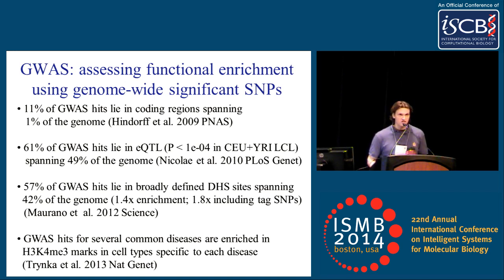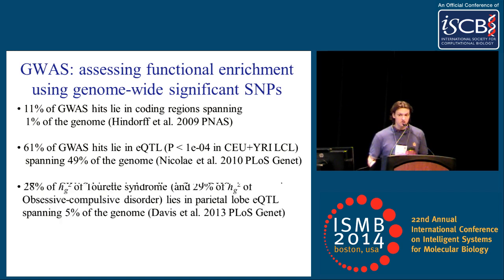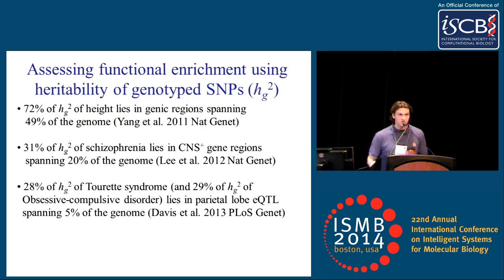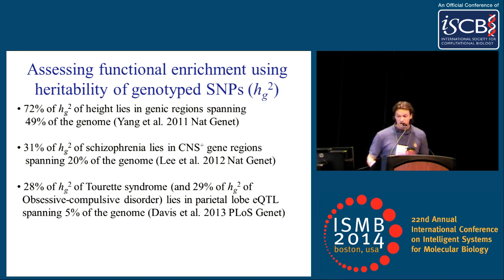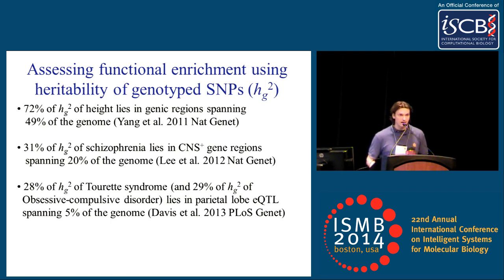A lot of this initial work focused on genome-wide significant SNPs from GWAS. More recently, people have started to be interested in the heritability approach. Initially, Yang et al. 2011 looked at genic versus non-genic regions in height. Then Lee et al. 2012 looked at CNS-plus gene regions for schizophrenia. And more recently, some interesting work with quite large enrichment for heritability of both Tourette's syndrome and obsessive-compulsive disorder, looking at a parietal lobe eQTL.